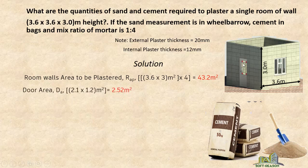We have a door here, so the door area is 2.1 (the height of the door) multiplied by 1.2 (the width of the door). Door widths vary — I have seen 1 meter and 900mm — but for this lesson we consider 1.2 meters as the width of the door. The door area equals 2.52 square meters.